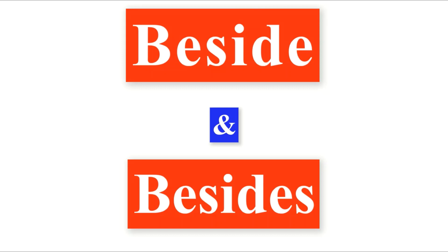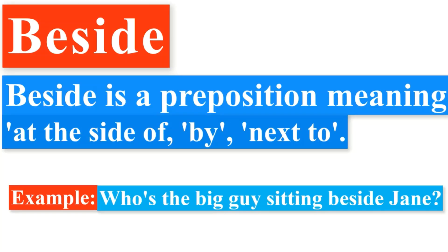The second pair of words is 'beside' and 'besides.' Beside is a preposition meaning 'at the side of,' 'by,' or 'next to.' For example: 'Who is this big guy sitting beside Jen?'